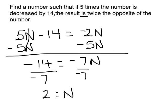So let's see if that works. 5 times the number, so 2 times 5 is 10, decrease by 14, that would be negative 4. The result is twice the opposite of the number. If the number is 2, the opposite of that is negative 2, twice negative 2 is negative 4. Alright, let's work our practice problem.